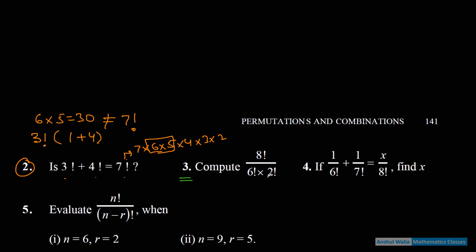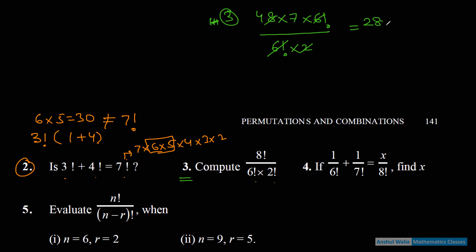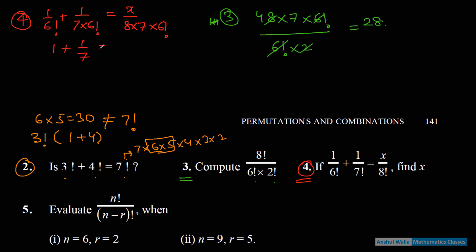Q3 (continued): 8!/(6! × 2!) — 8 factorial को 8×7×6! लिखो, नीचे 6! × 2 — 6! cancel, (8×7)/2 = 28 answer। Q4: 1/6! + 1/7! = x/8! — 6! common निकालो cancel करो: 1 + 1/7 = x/(8×7), (8/7) = x/56, x = 64.